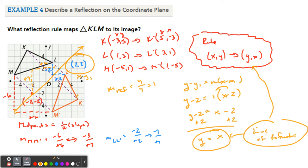So y equals x is the line of reflection that has that rule. So be aware of that. If you see that in a problem, we're reflecting across the line of y equals x, all you have to do is flip the x's and the y's.